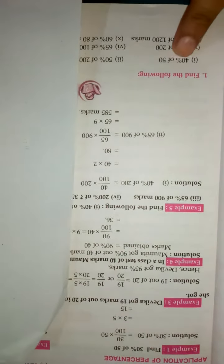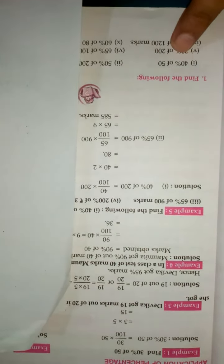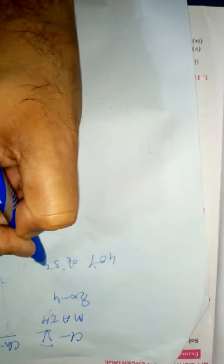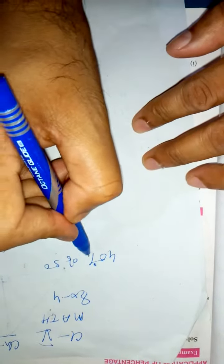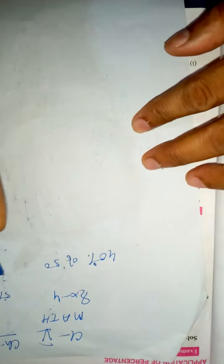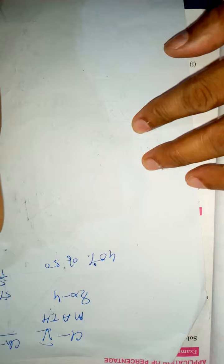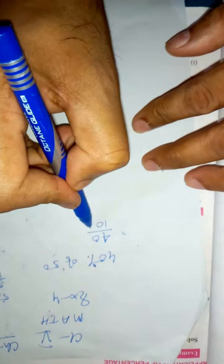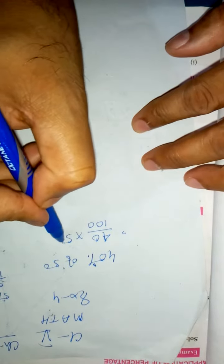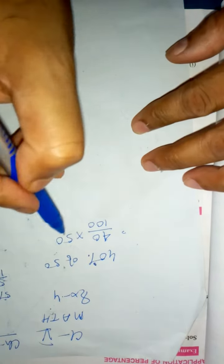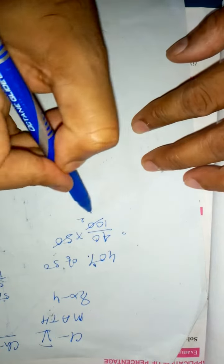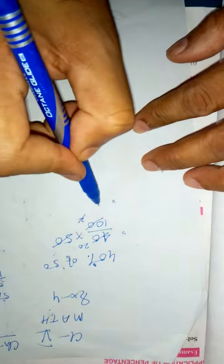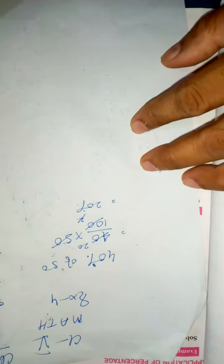The first problem asks us to find 40% of 50. In a previous class, I taught how to change percentages to fractions. Similarly here, write 40 over 100, and 'of' means multiply by 50. Then you divide 50 and 100 by 2. Then 40 divided by 2 gives you 20. That means 20 is the answer.